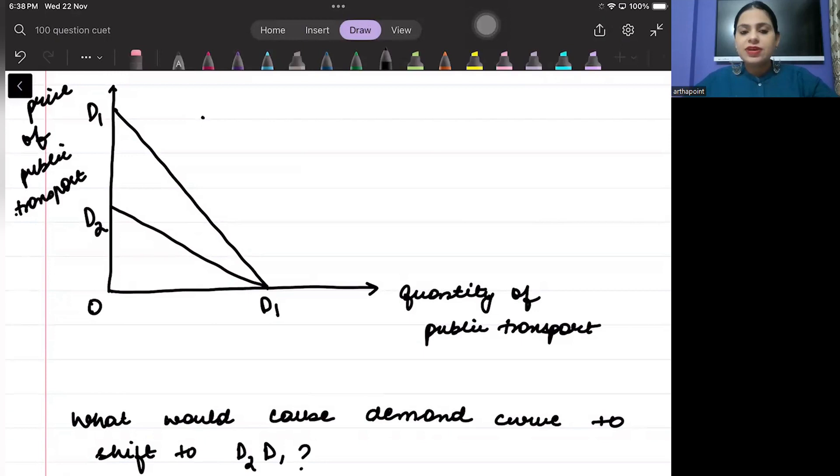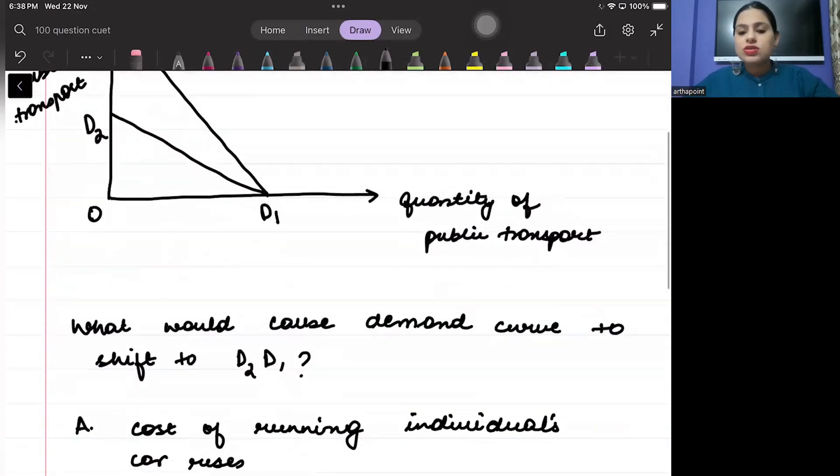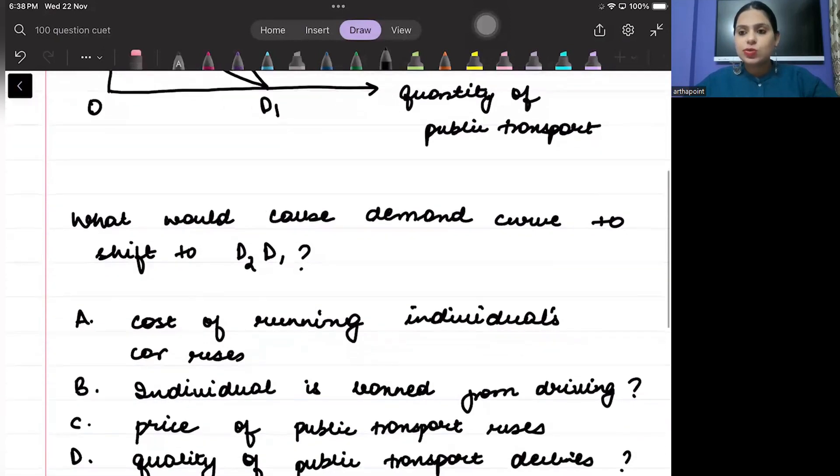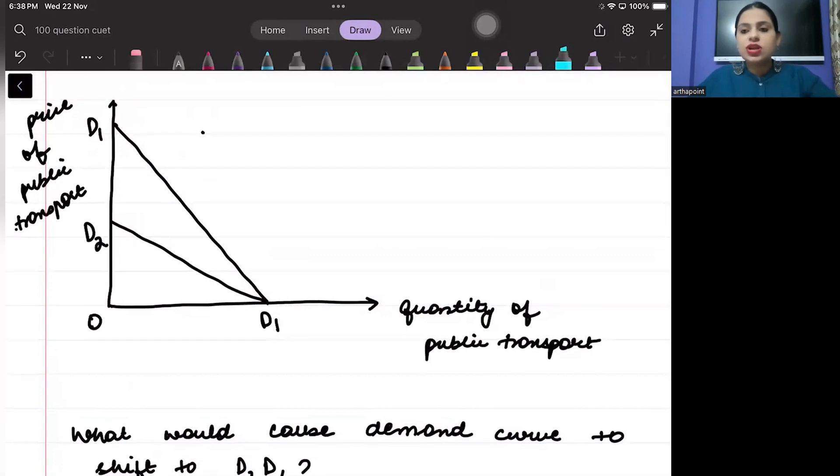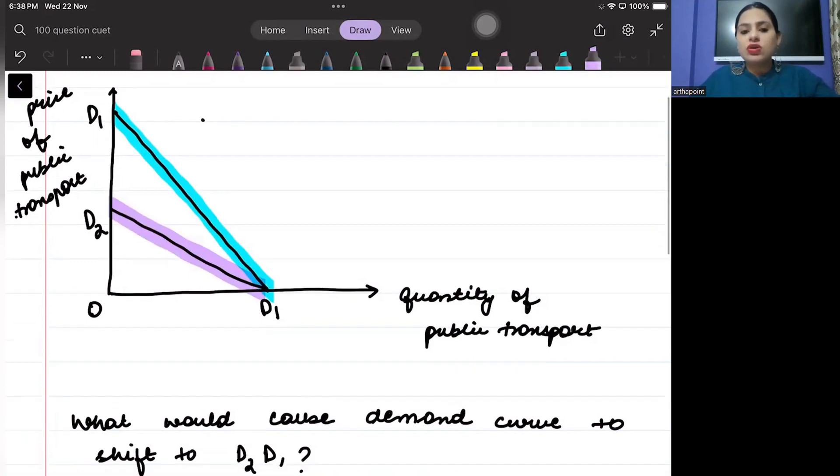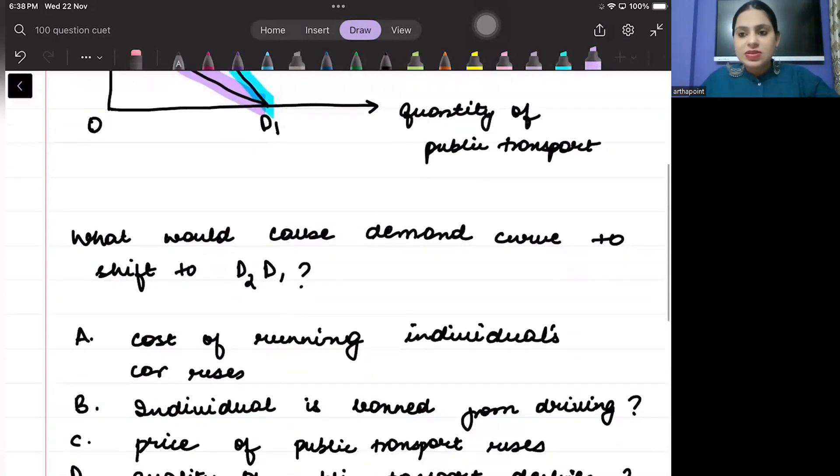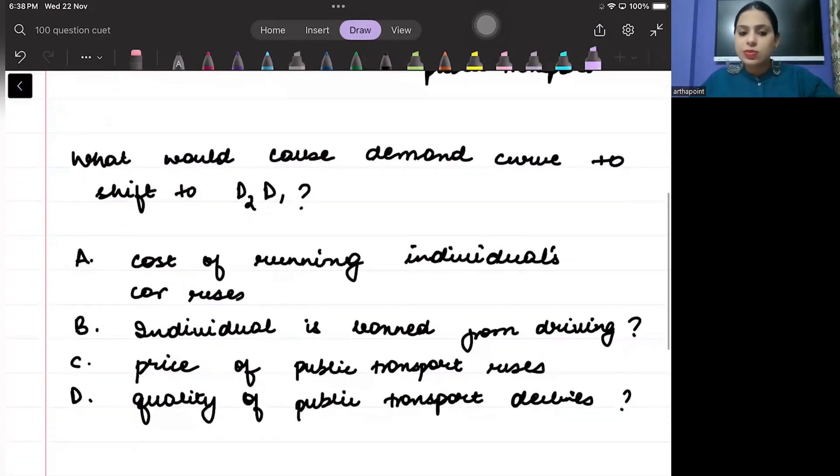Here, a figure is given to you and it says, which would cause demand curve to shift to D2D1. So which means that we can assume that my initial demand curve is D1D1. And we know that our new demand curve is going to be D2D1. So it is asking what is going to cause this shift? What happens? Why the demand curve goes to D2D1?